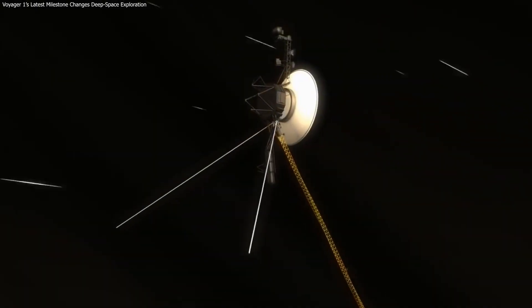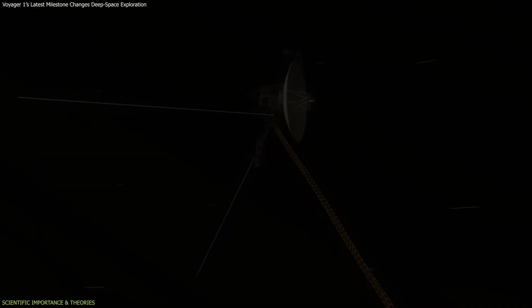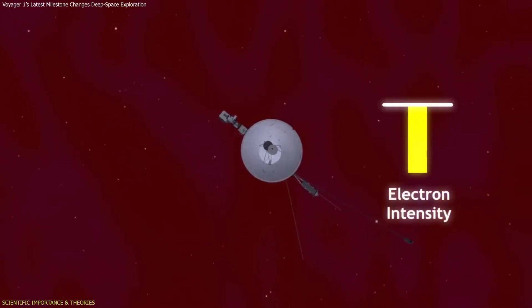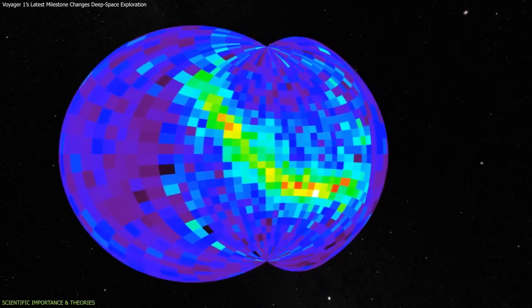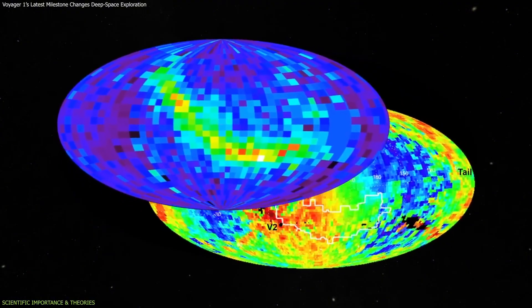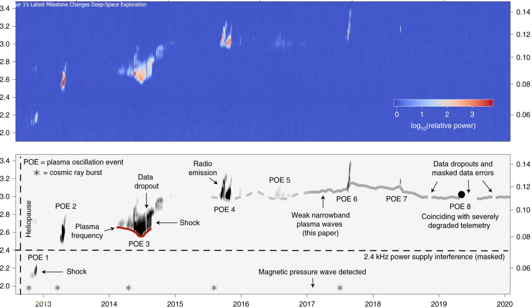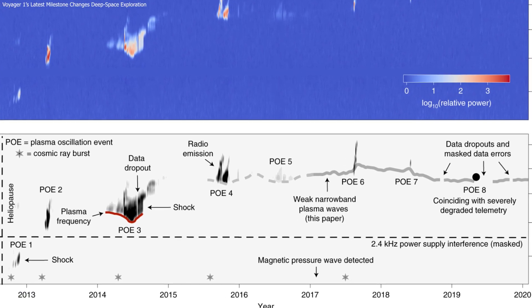The scientific significance of Voyager 1's position comes from its ability to gather direct measurements in a region no other spacecraft has entered. Most knowledge of the interstellar medium comes from remote observations and computer models. Voyager offers something different.